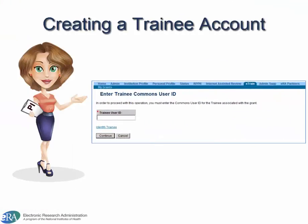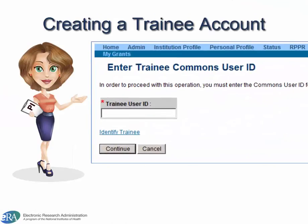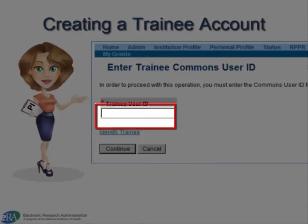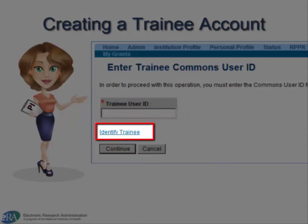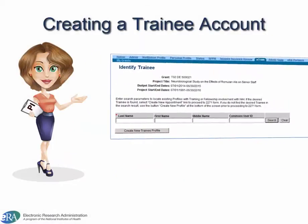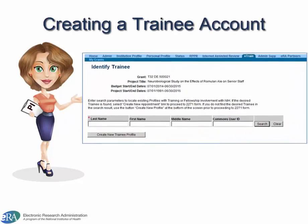The system will default to look for an existing account by asking for the trainee's ERA Commons User ID. If the PI does not know the user ID of the trainee, or the trainee is brand new to Commons, the PI clicks the Identify Trainee link. This opens a search screen, permitting the PI to search by name for a trainee that already has a Commons account.